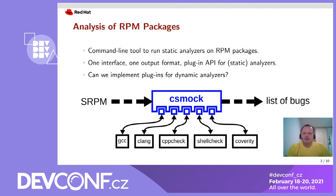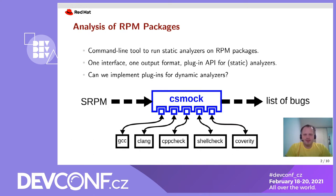So we know static and dynamic analyzers — let's have a look at analysis of RPM packages. Static analysis of RPM packages is easy. We have a tool named csmock, which takes a source RPM package and returns a list of potential programming mistakes detected by static analyzers. csmock provides an interface for plugins. The small blue boxes in this picture are csmock plugins, each responsible for a single static analyzer. The plugin interface makes it easy to plug in additional static analyzers as needed. But in this talk, we are focusing on dynamic analysis. So can we implement dynamic analysis plugins for csmock?